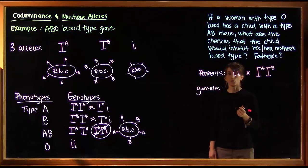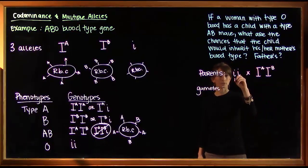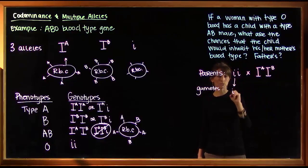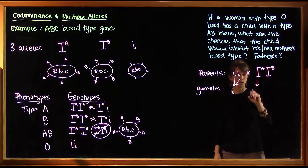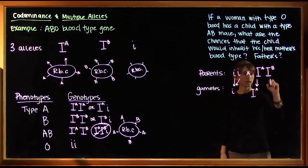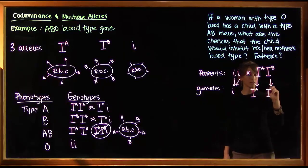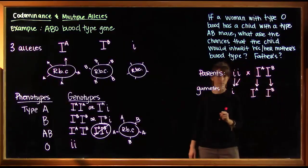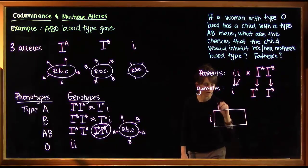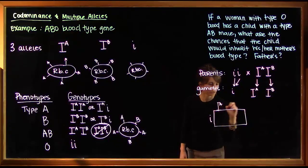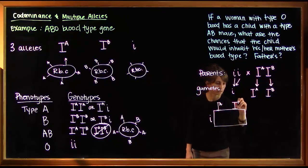Since this female only has one allele, she has two little i's, so every single gamete that she produces is going to carry a little i. But for the male, half of his gametes will carry that IA. The other half will carry the IB. So in making our Punnett square, we can put the little i on one side and our dominant alleles across the top.